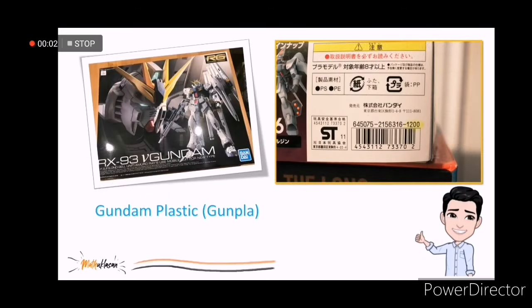I'm a Gunpla builder, and in the previous years, the manufacturer implicitly tells the consumers the suggested retail price of the kits using numbered codes. For instance, in this kit, the SRP is 1,200 yen. Can you see it here?